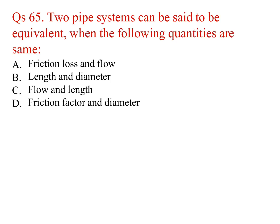Two pipe systems can be said to be equivalent when the following quantities are the same: friction loss and flow — that is hf and Q. The answer is A.